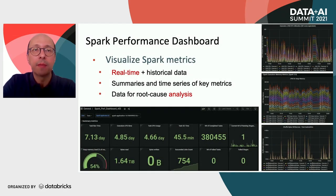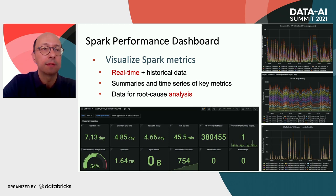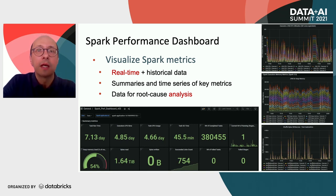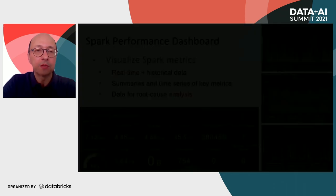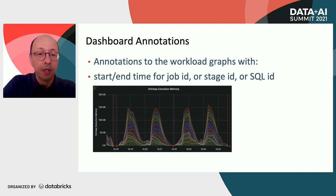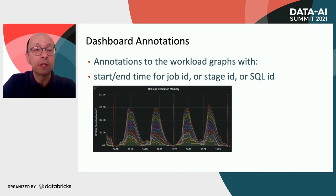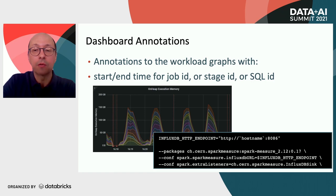The dashboard allows you to visualize Spark metrics stored in InfluxDB. It can be used for real-time monitoring or to explore historical data. The metrics are many — only a few are shown in the provided dashboards. Here you can see gauges that summarize metrics across time intervals, and other graphs represent metrics as a function of time. The final goal of this exercise is to feed monitoring data into performance troubleshooting and root cause analysis. Dashboard annotations allow you to link data about start and end time for job ID, stage ID, and SQL ID to the graphs in the dashboards.